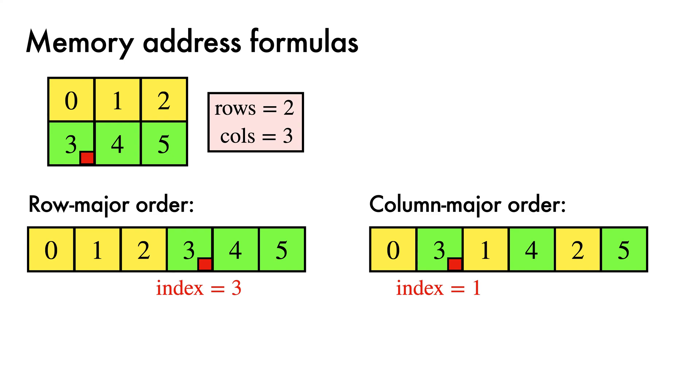To compute the storage index of the element in row i and column j, the formula is i times the number of columns in the matrix plus j. This simply encodes the fact that storage was constructed by traversing along the rows of the matrix. For each of the i rows we've descended by, we need to add the number of columns, in this case 3, to the total, then account for the offset j.